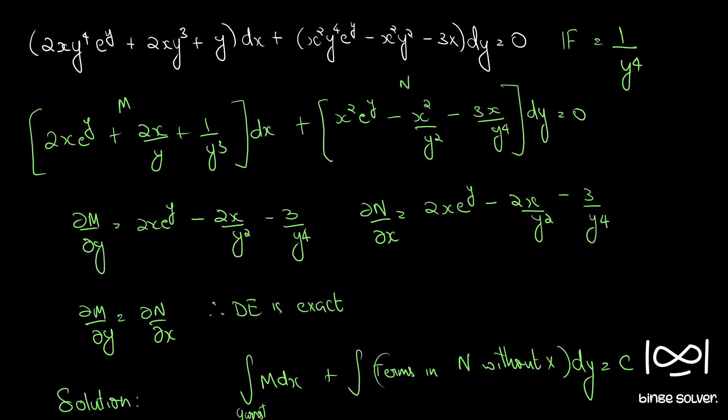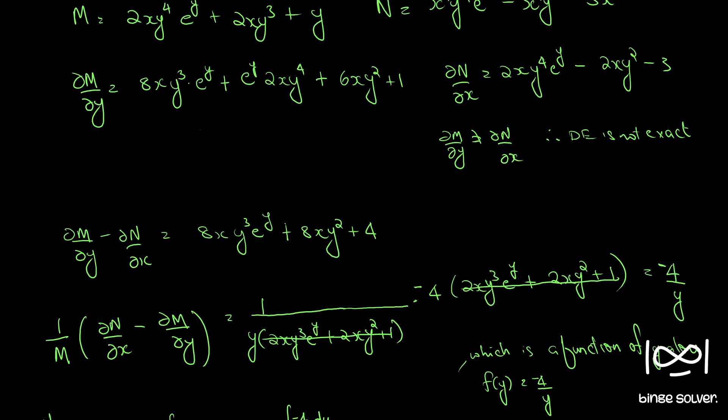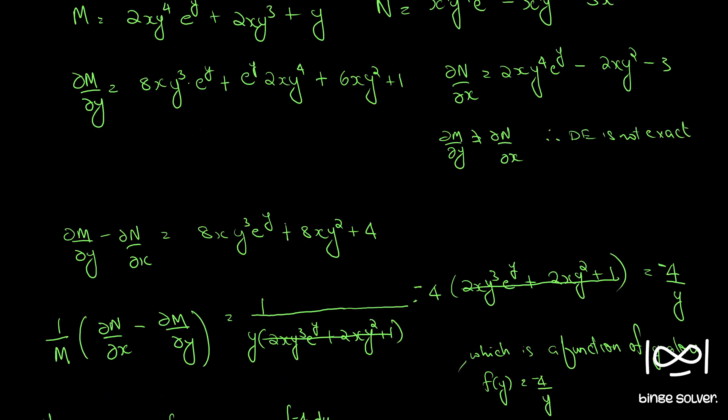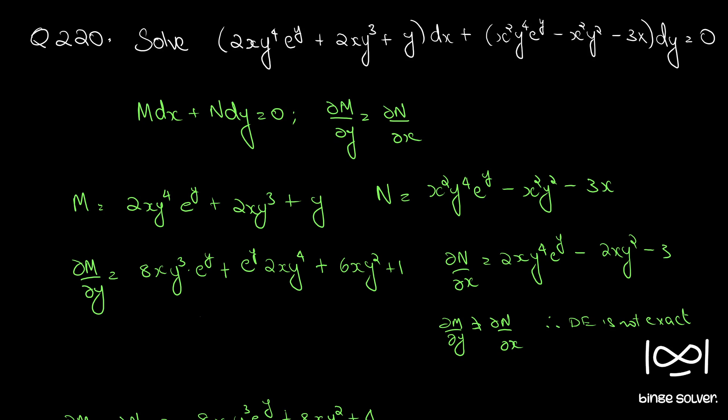We found our integrating factor as 1/y⁴ using Rule 5. Just remember: for Rule 5 it is ∂N/∂x minus ∂M/∂y (not the other way), and 1/M times (∂N/∂x minus ∂M/∂y). For Rule 4 it is ∂M/∂y minus ∂N/∂x. Don't mix them up. This is the solution to question number 220. Thank you.